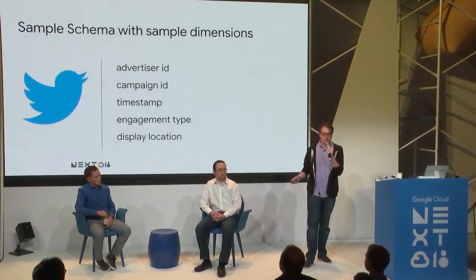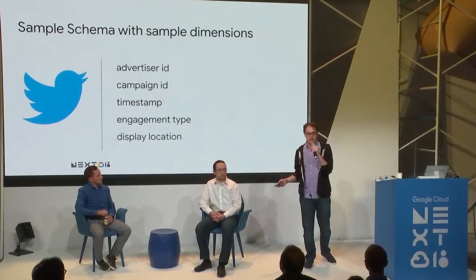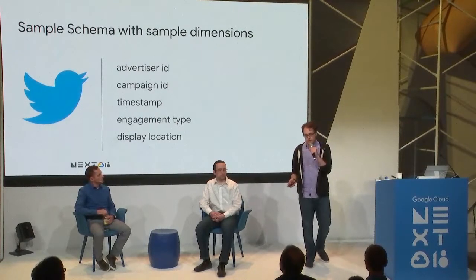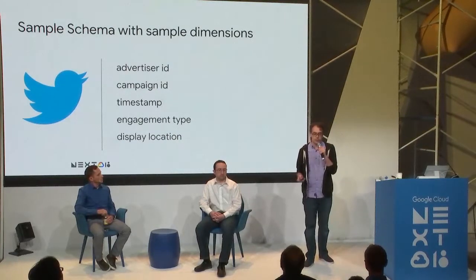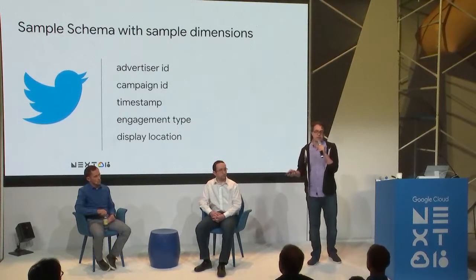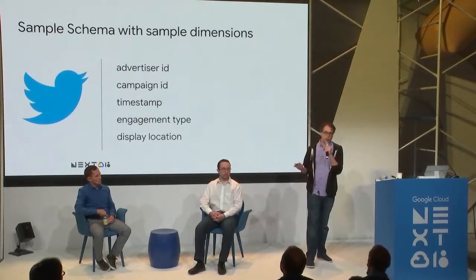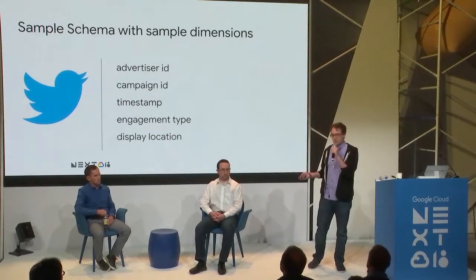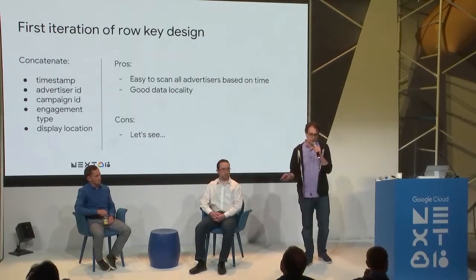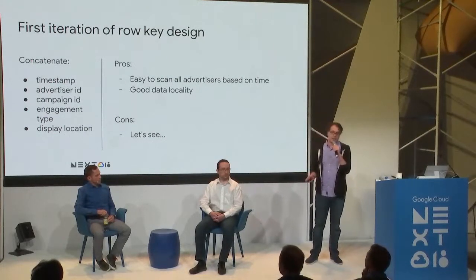Here's a simplified toy schema similar to our actual advertiser analytics. Dimensions include: advertiser ID (the ID given to any advertiser), campaign ID (the campaign they're running), timestamp at hourly granularity, engagement type (view, click, app install, etc.), and display location (timeline, search result, etc.). Our first iteration was simple: concatenate all these dimensions left to right to form the row key — timestamp, advertiser ID, campaign ID, and so on.